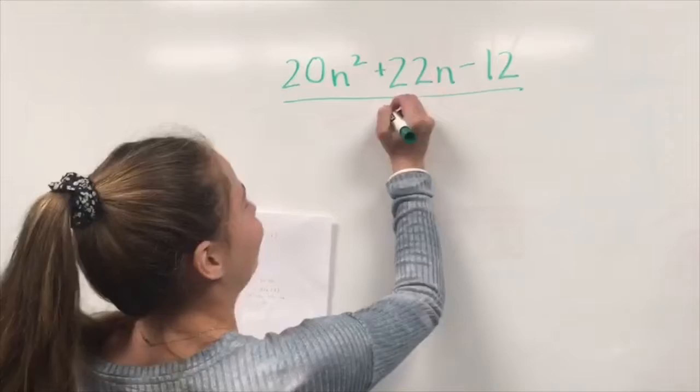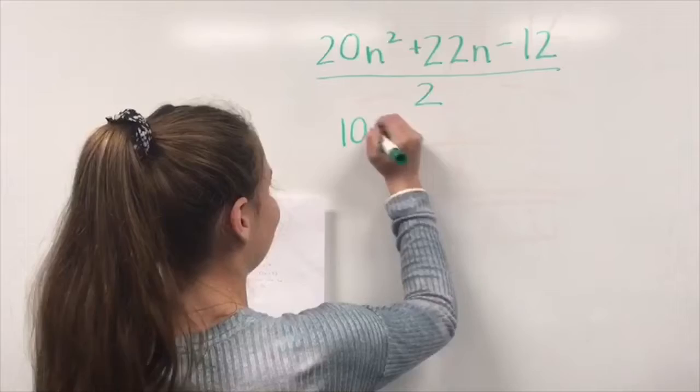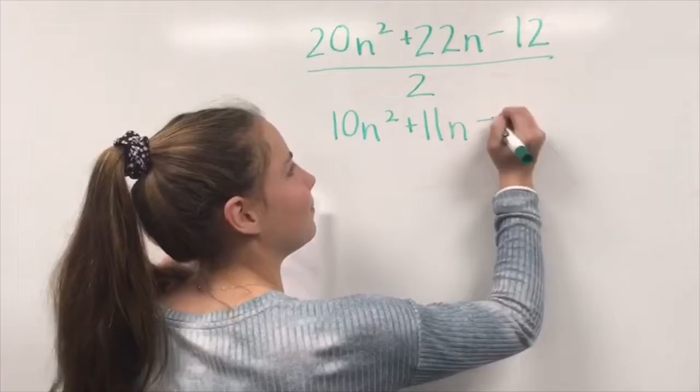First, you divide by 2. You get 10n squared plus 11n minus 6.